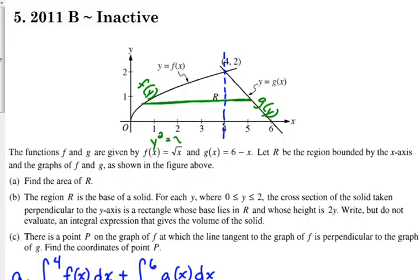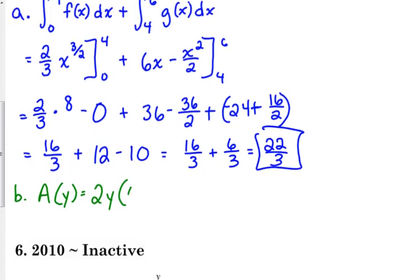F would be Y squared is equal to X. And 6 minus Y is the other one, that's our G of Y. So it's 6 minus Y minus Y squared is our base of the rectangle. We're just going to add up all those rectangles from 0 to 2. Don't forget your DY on the end. Height times the base. This is the top function, that's the bottom function. All those give you the heights of, or the lengths of the bases. You just have to write, but do not evaluate.